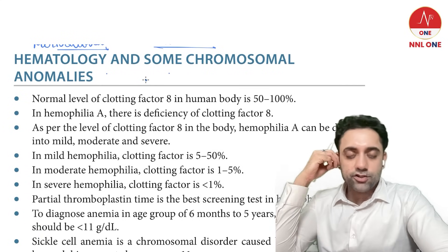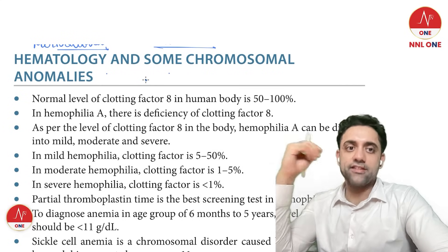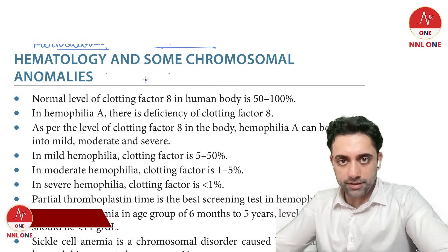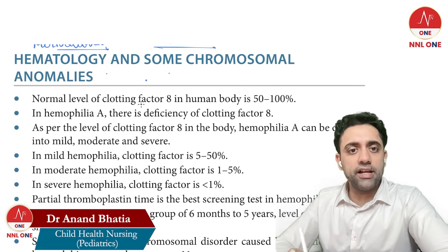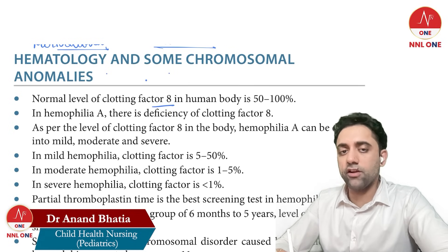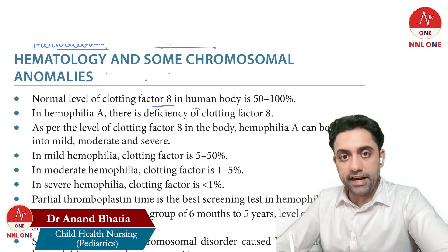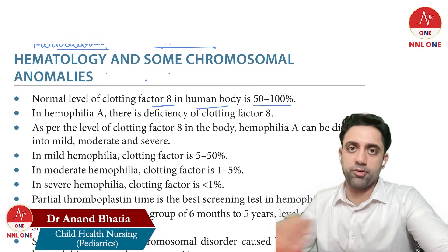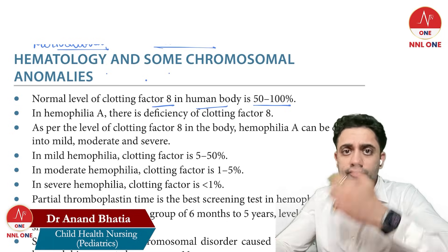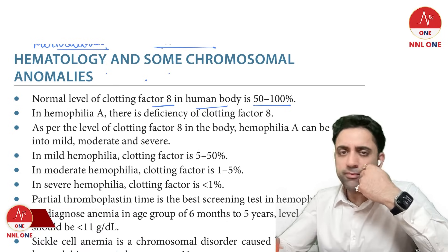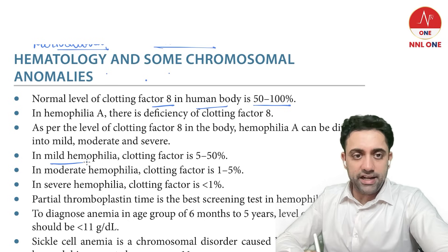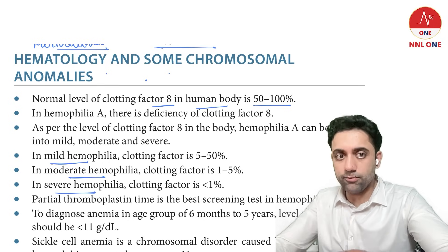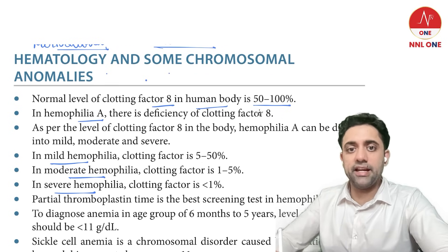Let's start this class. The next topic is hematology and some chromosomal anomalies. The normal level of clotting factor VIII in the human body is 50 to 100 percent. Depending on the level, we have mild, moderate, and severe hemophilia — because in hemophilia A, the clotting factor deficiency is factor number eight.